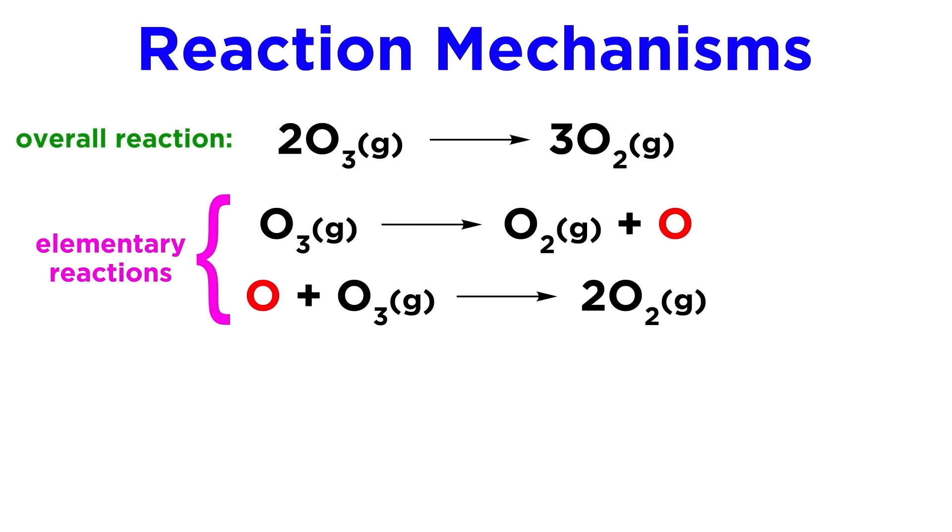Looking again at the mechanism, we notice that monoatomic oxygen is present as a product in the first step and a reactant of the second step, but does not show up in the overall reaction. That means monoatomic oxygen is an intermediate in this reaction.